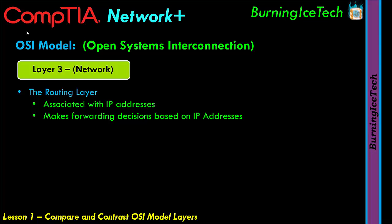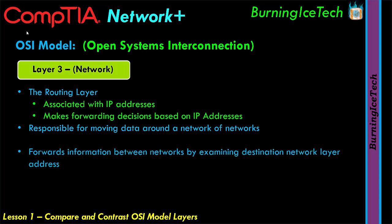The network layer is responsible for moving data around a network of networks — known as an internetwork or the internet. While the data link layer forwards data using hardware addresses within a single segment, the network layer moves information across the internetwork using logical network and host IDs. Packets are forwarded router by router — hop by hop — through the internet to the target network. Once the destination network is reached, the MAC address is used to deliver the packet to the target node.